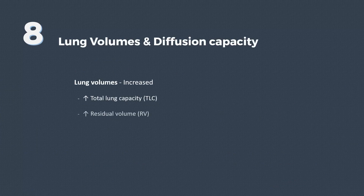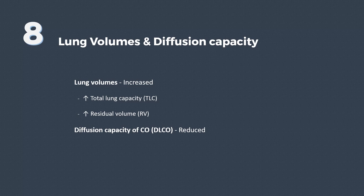Lung volumes are high, demonstrating air trapping, especially in emphysema. There is increased total lung capacity and residual volume. Gas exchange is also impaired, demonstrated by reduced diffusion capacity of carbon monoxide.